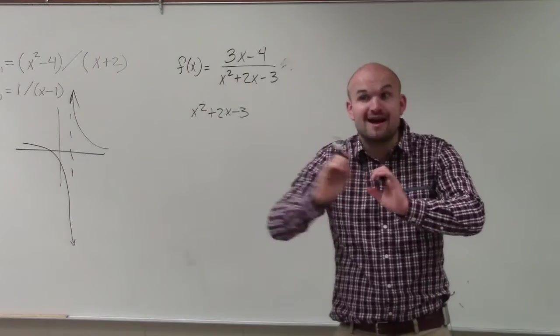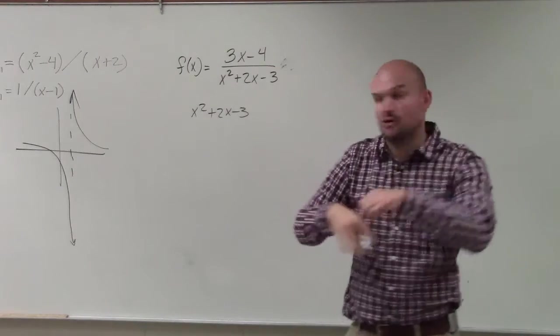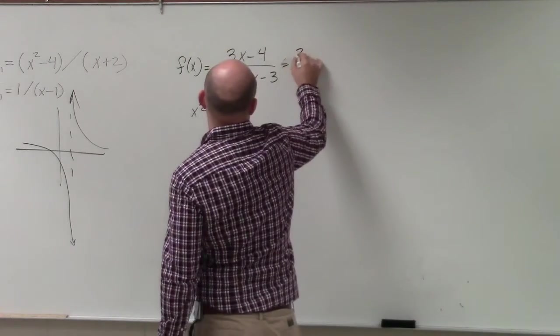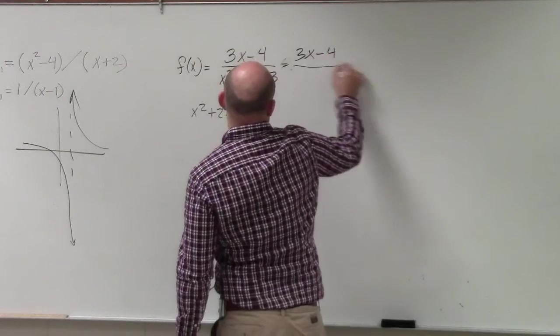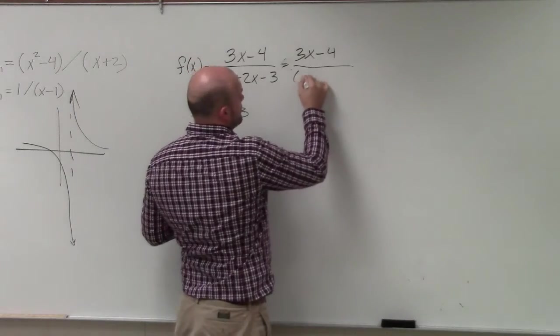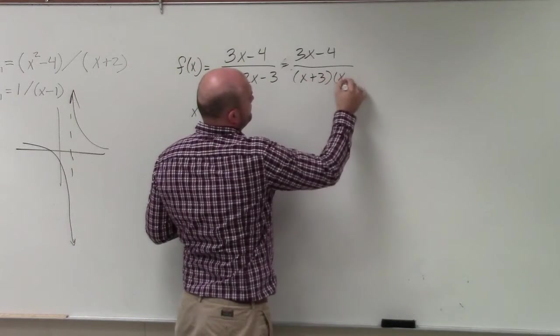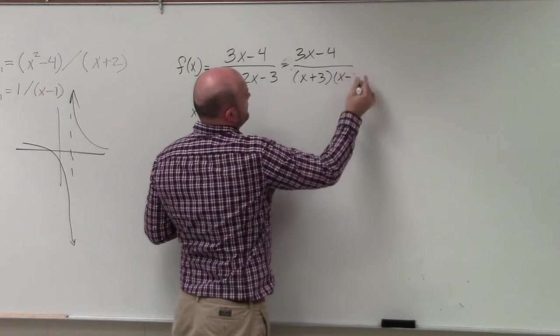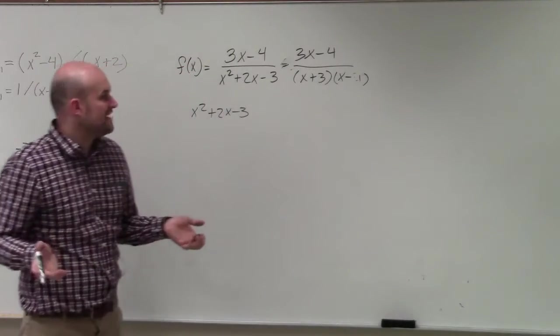And remember, holes are just holes in the graph. For asymptotes, the graph approaches. So I rewrite this as I factor—what two numbers multiply to give you negative 3, add to give you positive 2? OK, so can anything be factored out with the numerator?